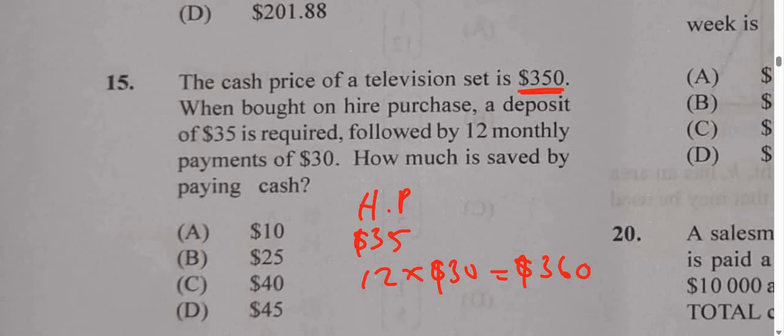So that will be the hire purchase. $35 plus $360 is how much? Let's see. $395. So this is how much you'll pay for hire purchase.